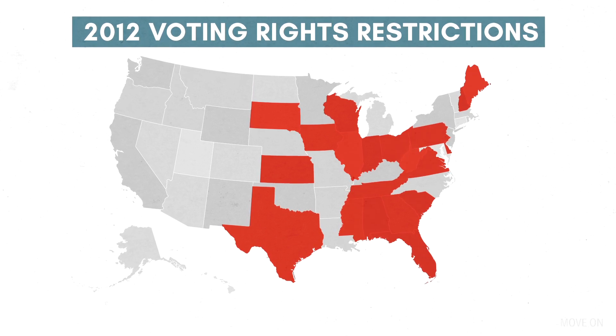State after state can't point to a single instance of in-person voter impersonation. Not one. Name it for what it is — it's an attempt to repress minority voting, masquerading as an attempt to end corruption.